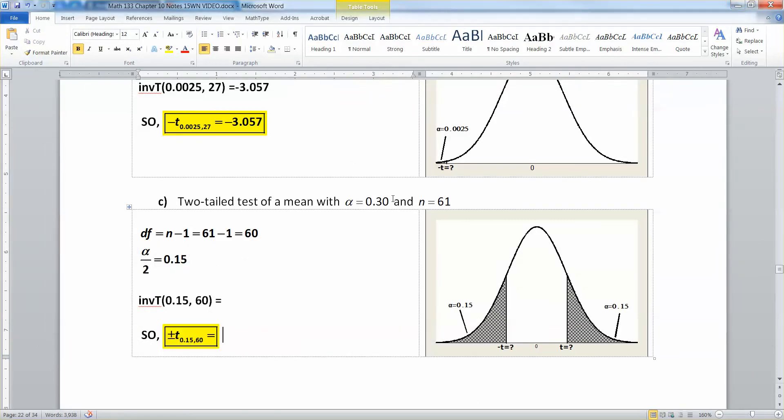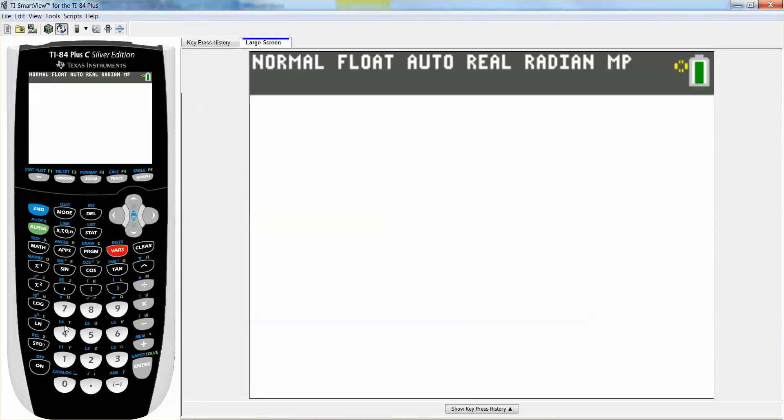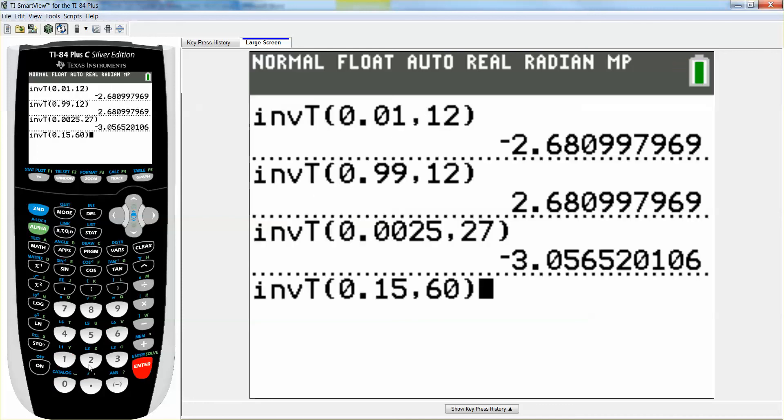All right. So if I take 0.30, 30%, and I cut it in half, I get 15%, which is 0.15. So I'm going to go find 0.15 inverse T, 0.15, and then 60, paste, enter. And I get negative 1.045.